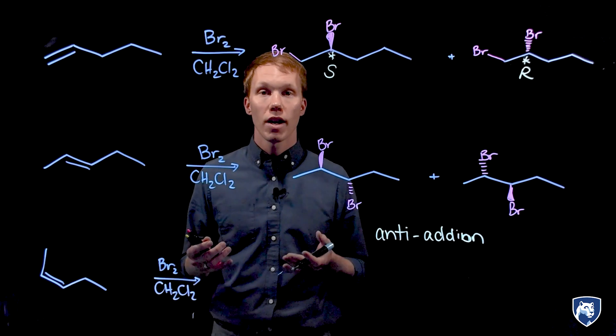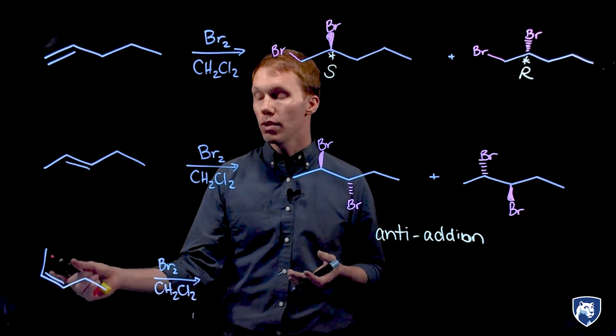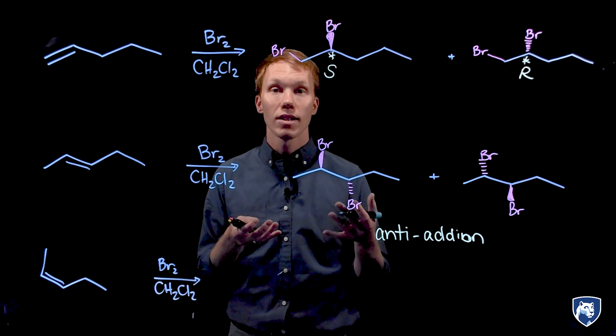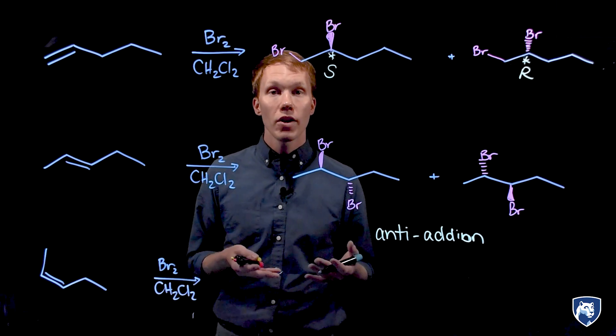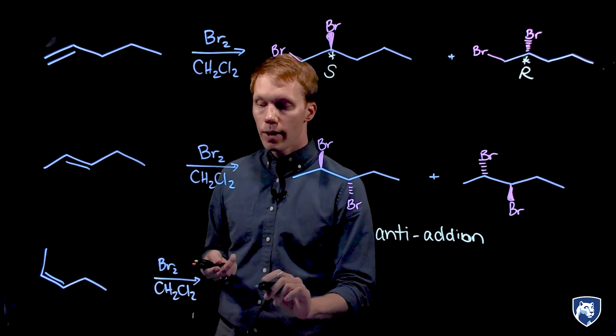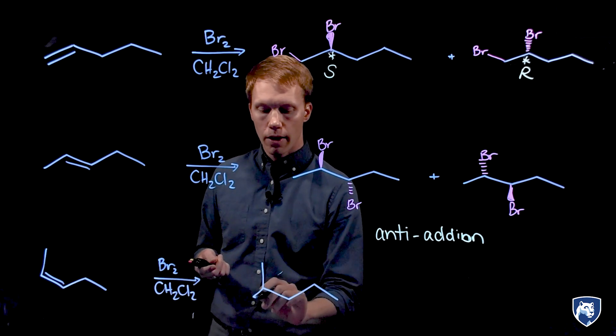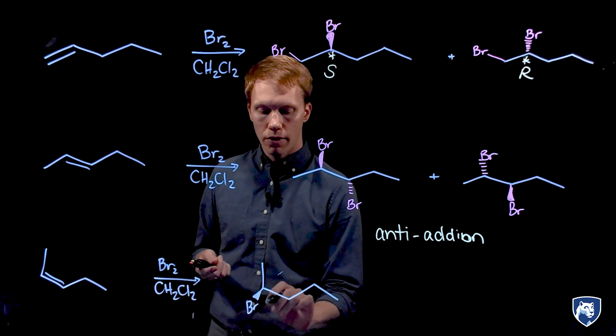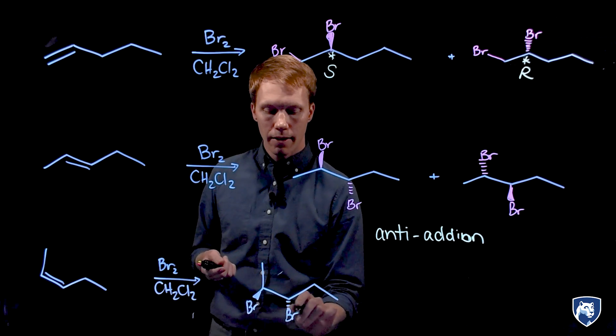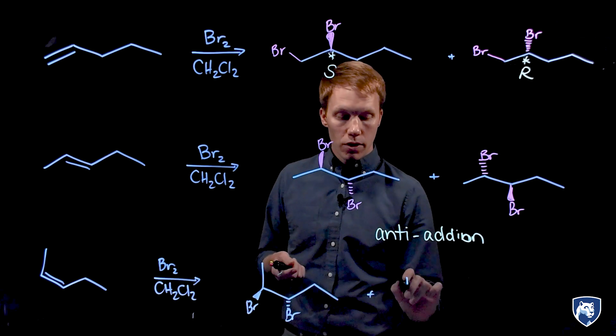If we change the configuration of our alkene from an e-alkene to a z-alkene, we can actually change the stereoisomers that are produced. We still get an anti-addition where one bromine adds to the front and the other adds to the back the two different ways.